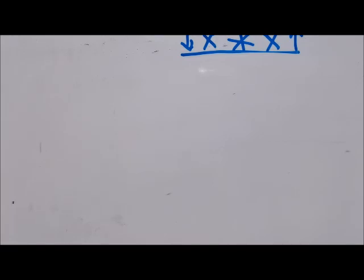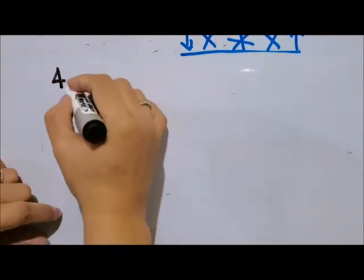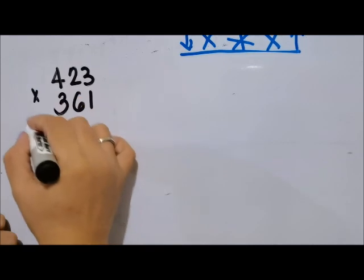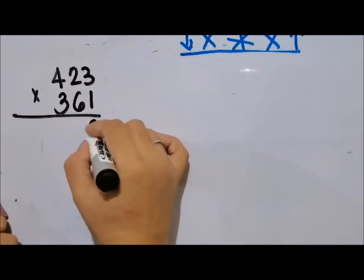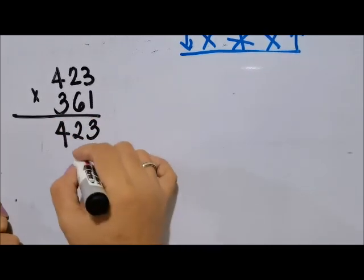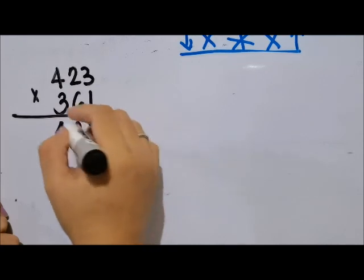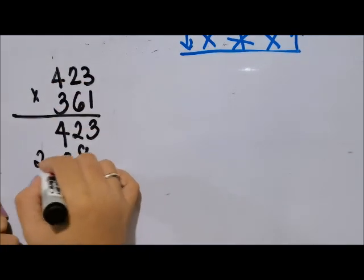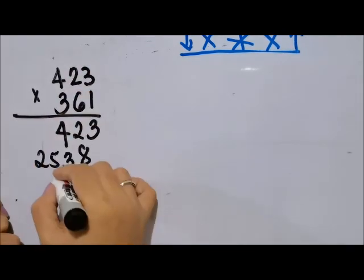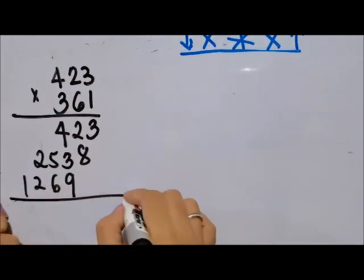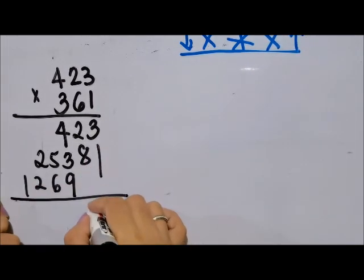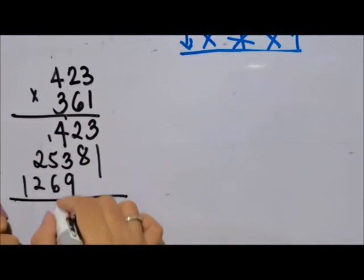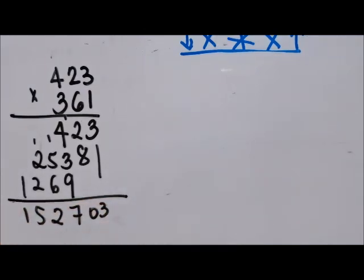Let's say 423 times 361. The traditional way: 3 times 3 is 9, 2 times 3 is 6, 4 times 3 is 12. Then 6 times 3 is 18, 6 times 2 is 12, 6 times 4 is 24. Then 3 times 3 is 9, 3 times 2 is 6, 3 times 4 is 12. Then you add: 3, 0, 7, 2, 5, and 1. We have an answer.